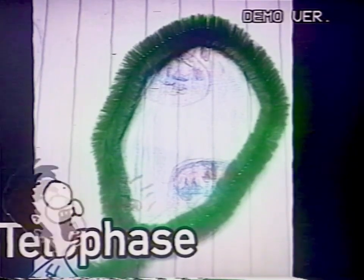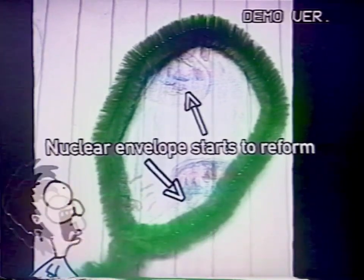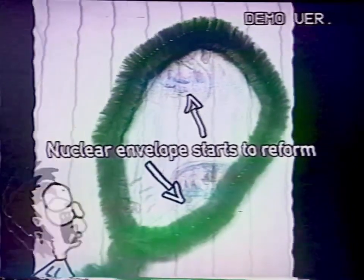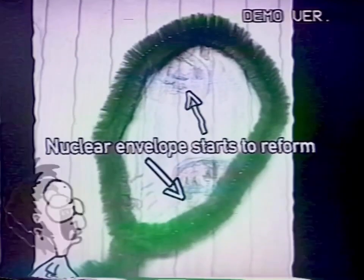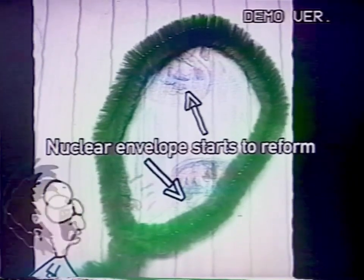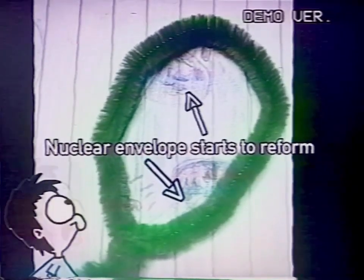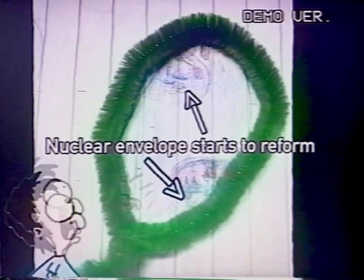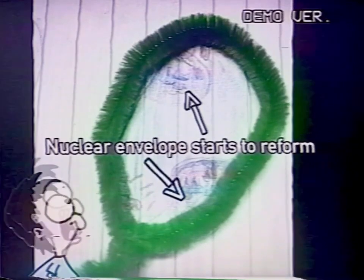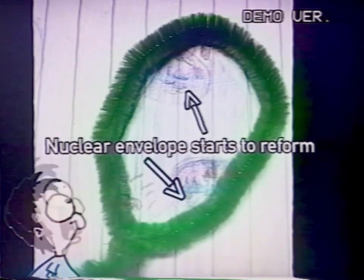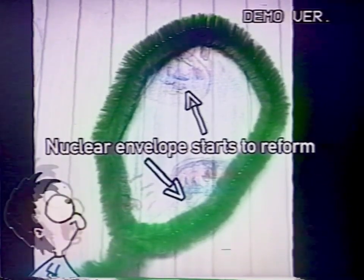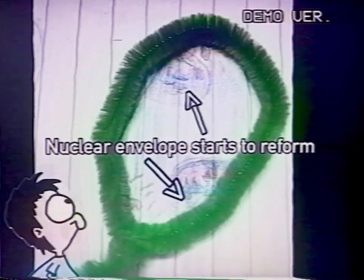The next phase after anaphase is telophase. During telophase, the chromosomes lose their distinct shape, and then the two nuclear envelopes are formed.